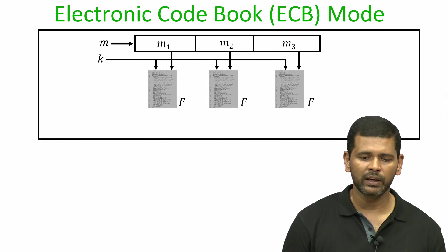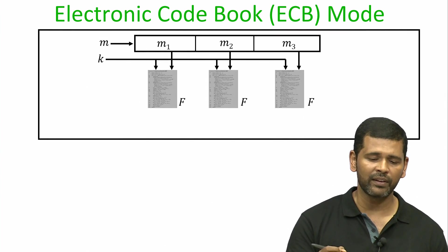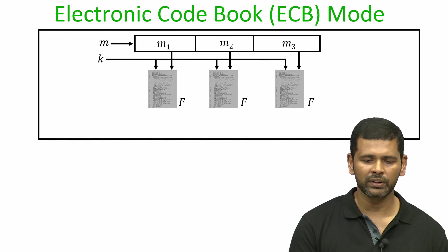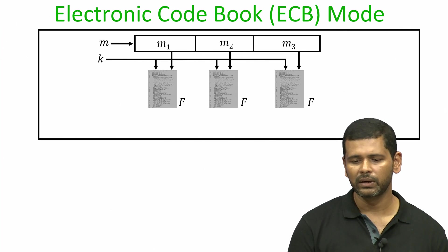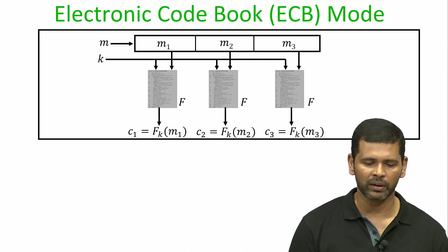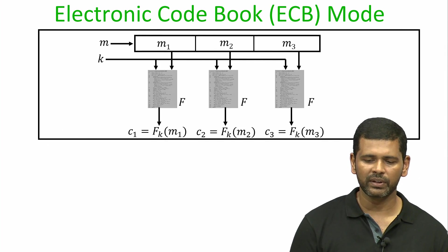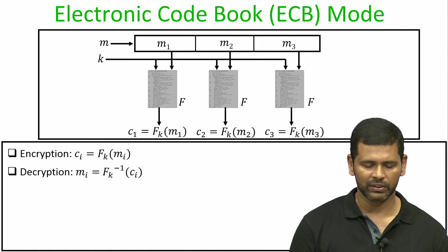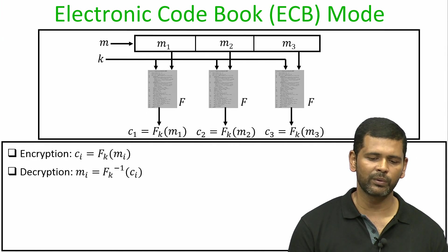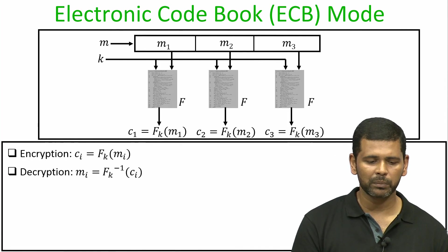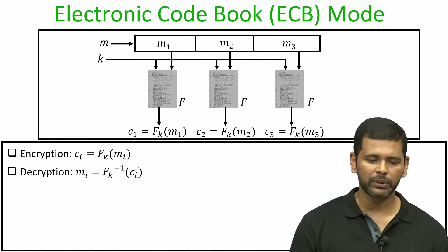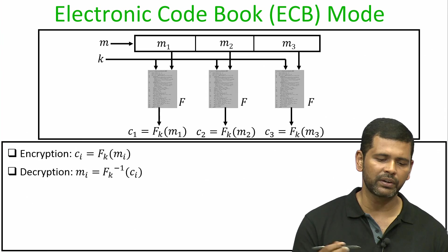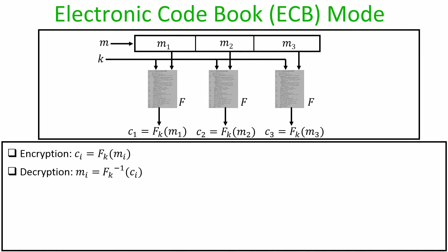In ECB mode, the block inputs for the function f are simply the message blocks themselves: m1 goes as the block input for the first invocation, m2 for the second, and m3 for the third. The resultant outputs c1, c2, c3 form the ciphertext as their concatenation. In general, the encryption is the evaluation of fk on block mi, and decryption is the inversion of fk on ciphertext ci.